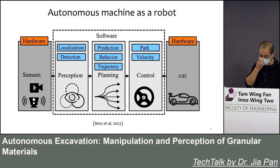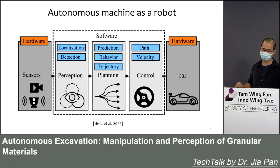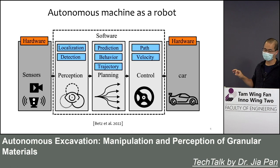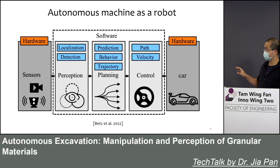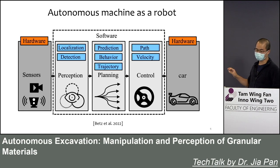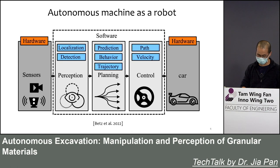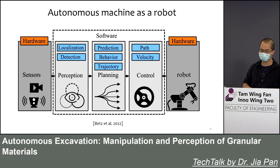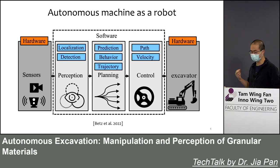A self-driving car uses a general robotics pipeline. You have hardware like sensors to collect data about the environment. That data goes through a software pipeline including perception, planning, and control. The software analyzes the data and makes decisions, and the output is low-level commands sent to the car so it can drive by itself. This general pipeline works for any robot, and of course it also works for a special machine like an excavator.